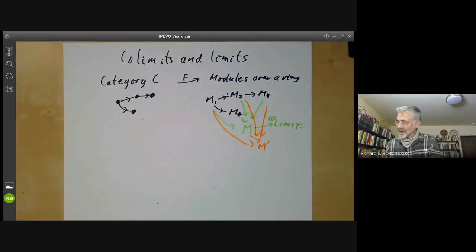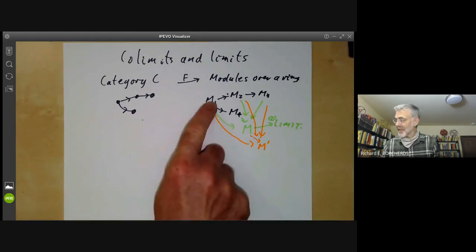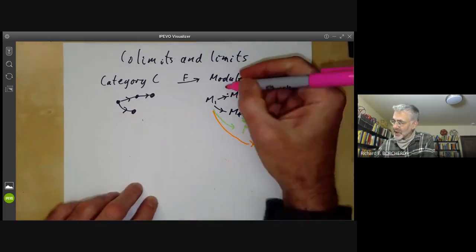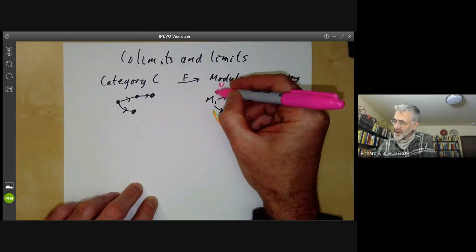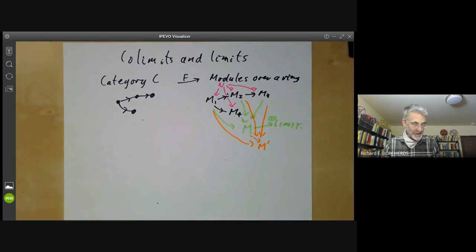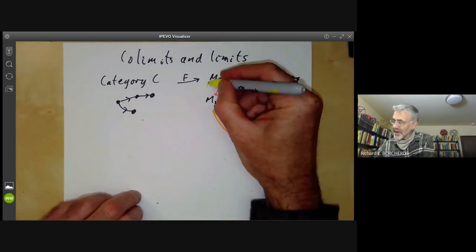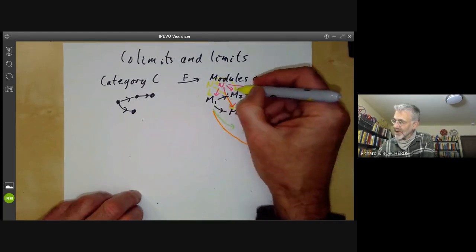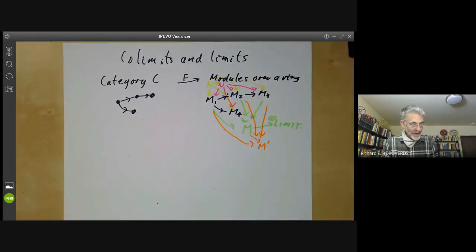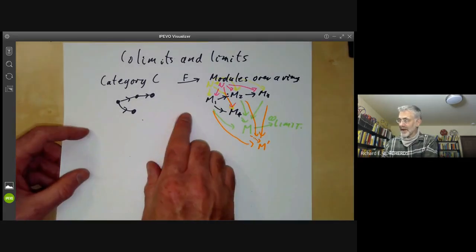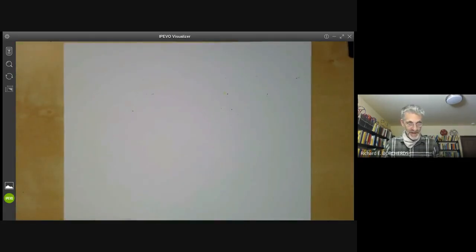This element M is called a co-limit of this functor from C to modules. We define limits in the same way, except that instead of having maps from the Mi to M, we have maps from M to all the Mi. So the limit N is an object with maps to all the Mi making it commute, which is universal in the sense that if we have any other object with maps to all the Mi, then there's a unique map going that way. This rather abstract definition is a bit hard to understand at first, so I'll give lots of examples of limits and co-limits.